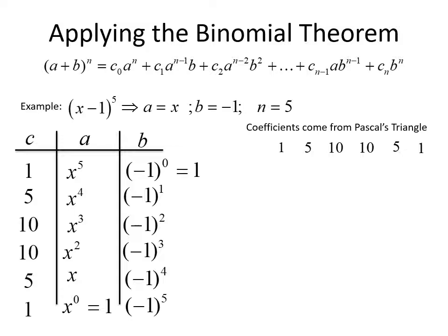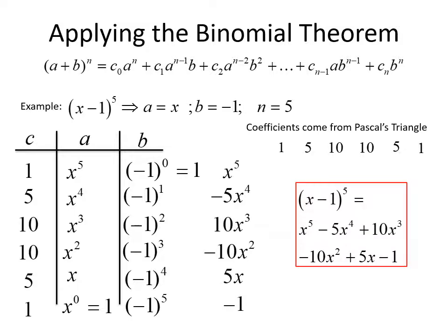Once we have this table created, we figure out the terms of our polynomial by multiplying across each row. 1 times x to the fifth times 1 gives us x to the fifth. 5 times x to the fourth times negative 1 gives us negative 5x to the fourth. 10 times x cubed times negative 1 squared (which is positive 1) gives us 10x cubed. 10 times x squared times negative 1 cubed (which is negative 1) gives us negative 10x squared. 5 times x times negative 1 to the fourth gives us 5x. And 1 times negative 1 to the fifth gives us negative 1. So (x − 1) to the fifth equals x to the fifth minus 5x to the fourth plus 10x cubed minus 10x squared plus 5x minus 1.